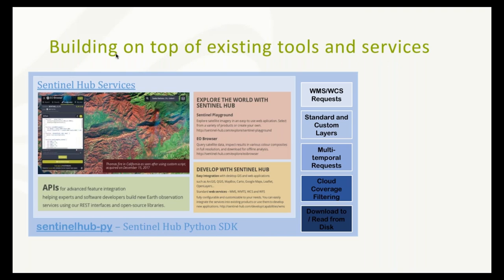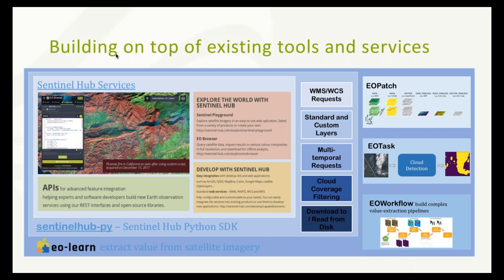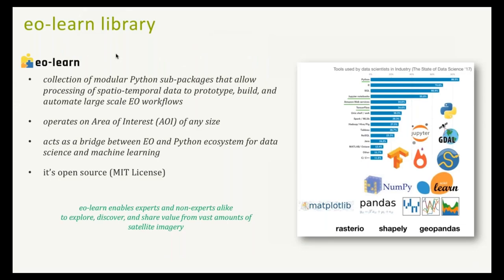By the sentinel-hub-py library we can easily get data as NumPy arrays in Python. But then the next step is to manipulate and operate on this EO data, and this is where eo-learn steps in. The eo-learn library aims to make value extraction from satellite imagery easier. It has three building blocks — EOTask, EOPatch, and EOWorkflow — which we will discuss in more detail later.